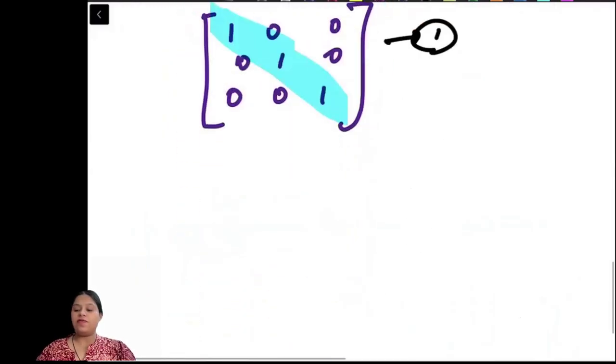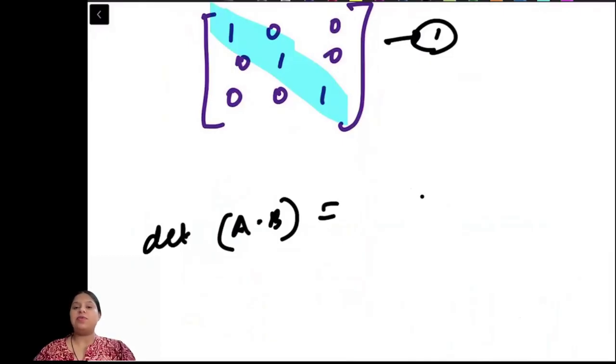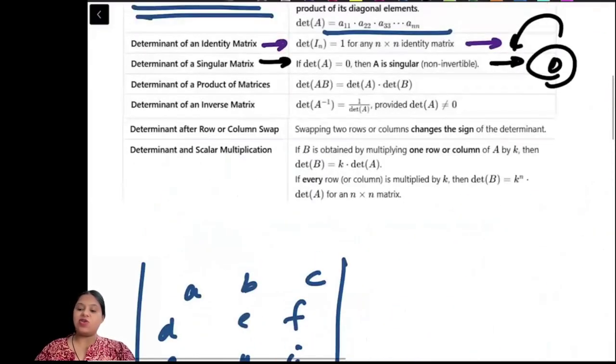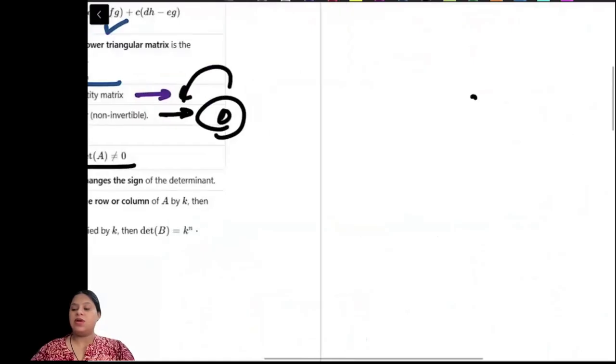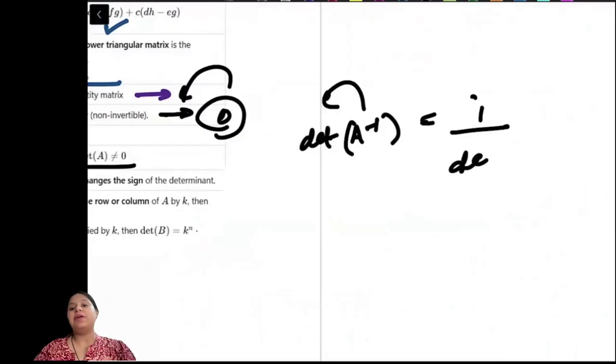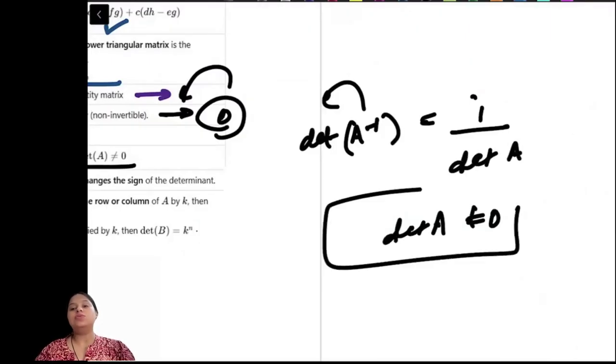The determinant of A times B equals determinant of A times determinant of B, as long as A and B exist. The determinant of A inverse is 1 over determinant of A, provided determinant of A is not equal to 0.